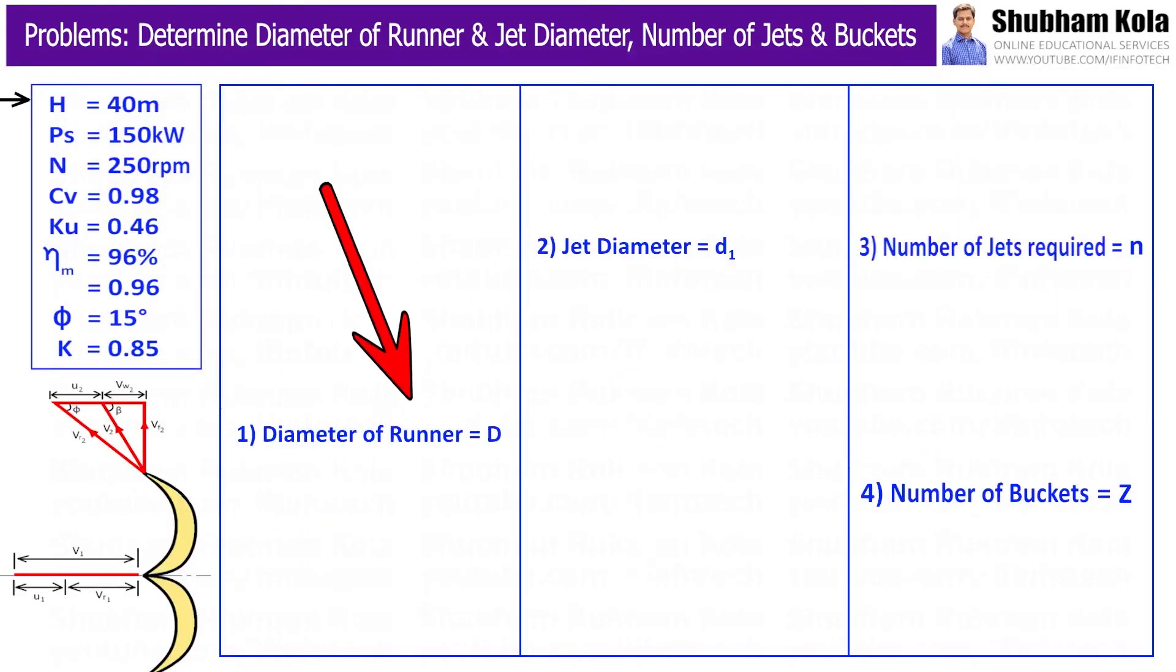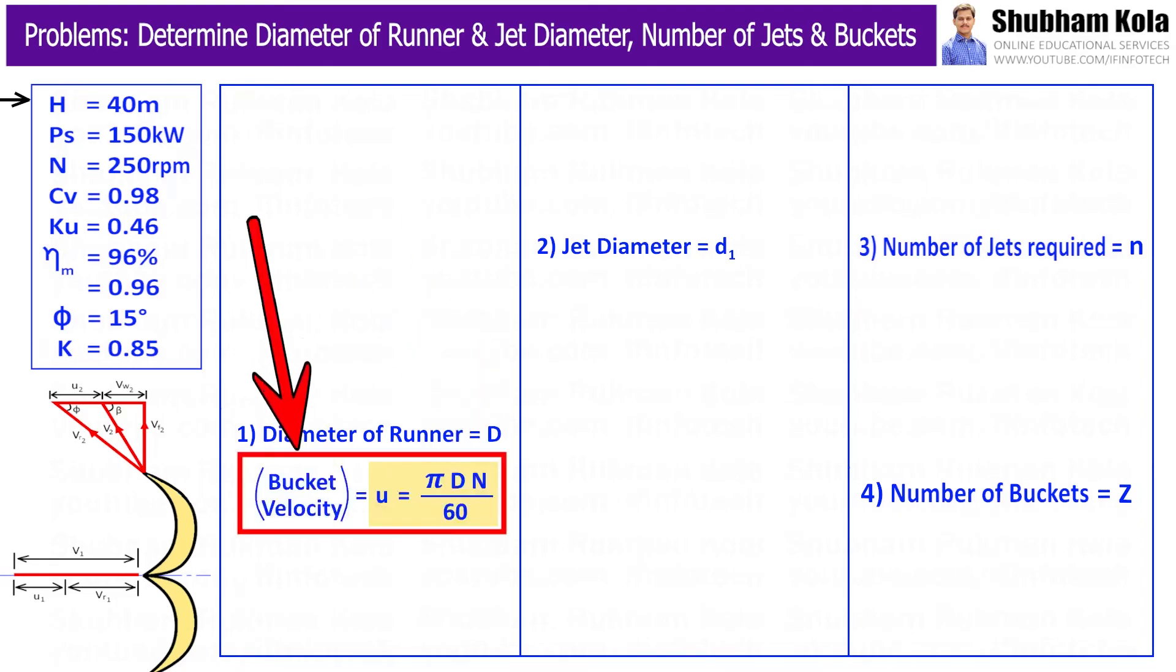First of all, we want to calculate diameter of runner, that is capital D. To calculate this value, we use the formula of bucket speed u which is equal to πDN/60.